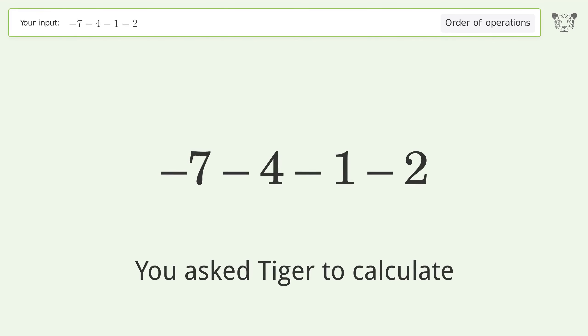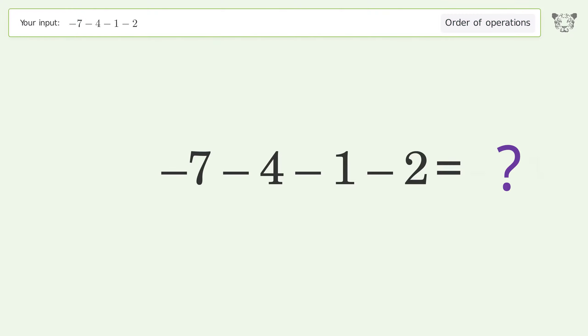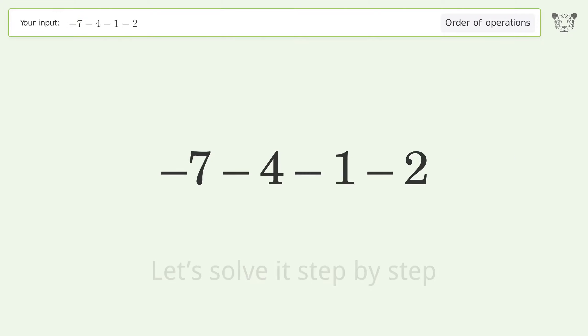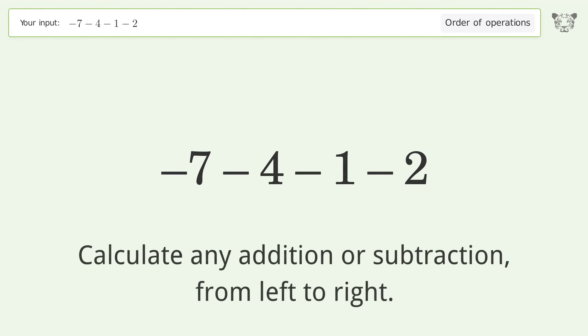You asked Tiger to calculate. This deals with the order of operations. The final result is negative 14. Let's solve it step by step.